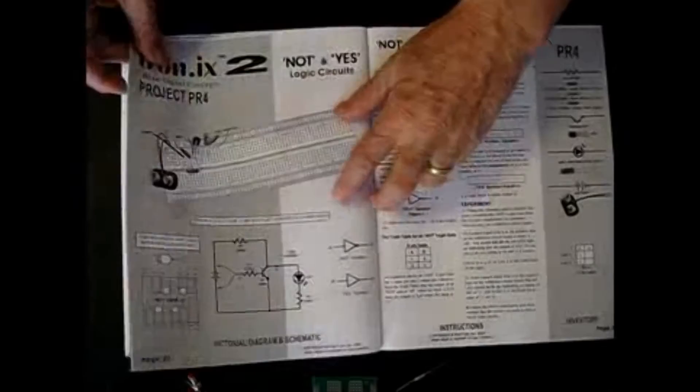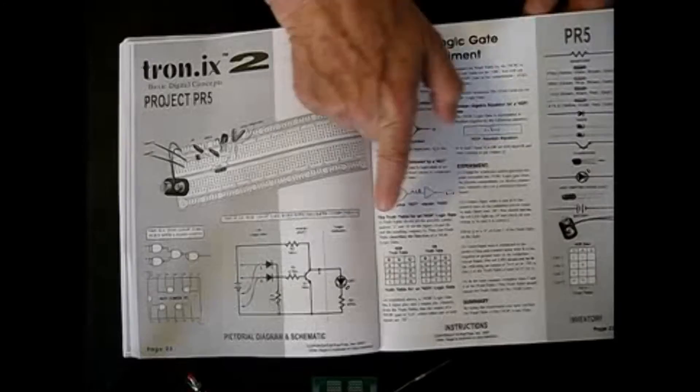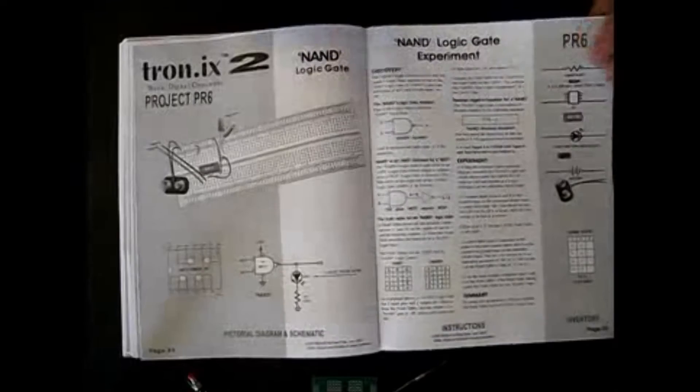Next step, next lesson, we go in and we build a NOT and a YES gate. Same situation. The next one, we introduce the NOR gate with all of its truth tables, comparing it to the OR gate. The next experiment is the NAND gate.